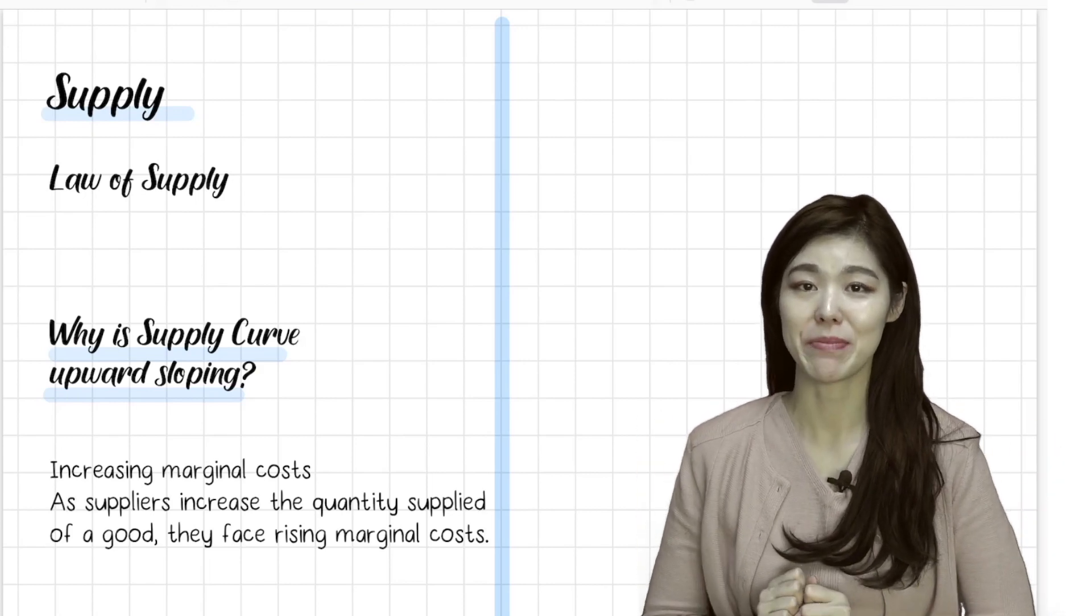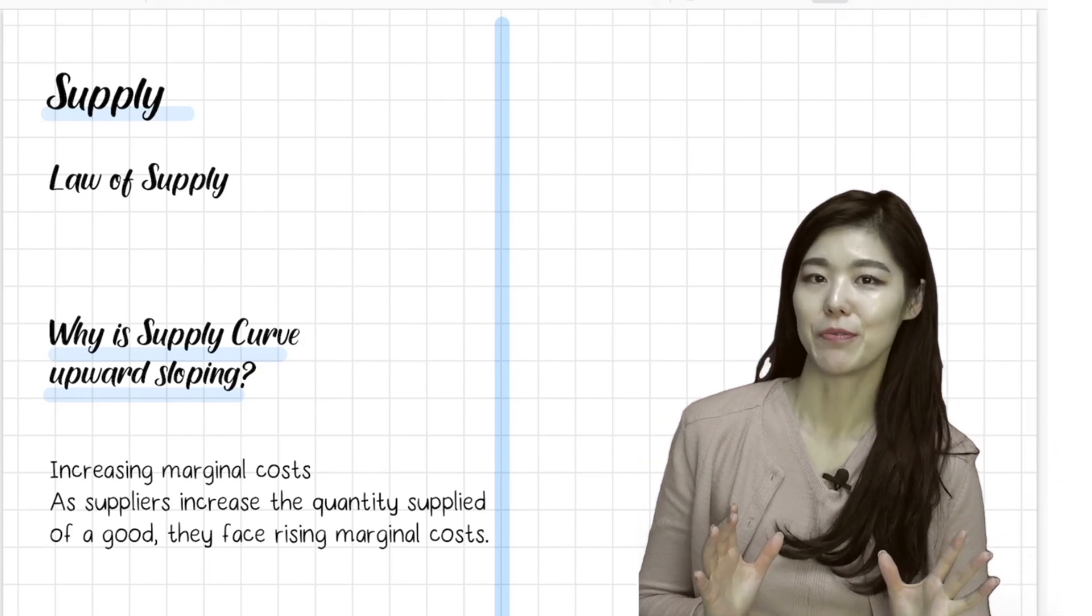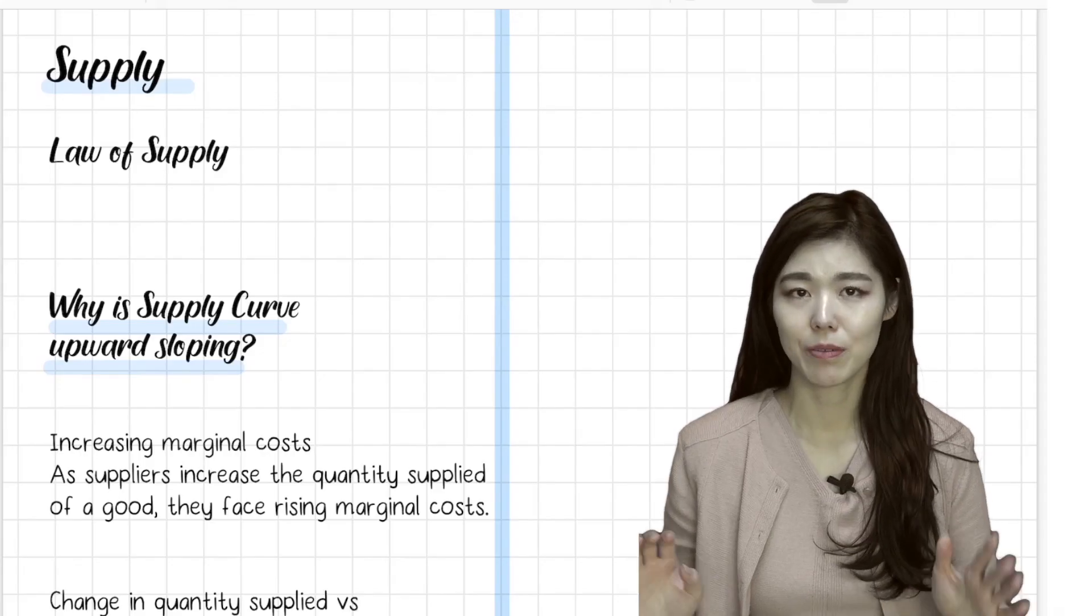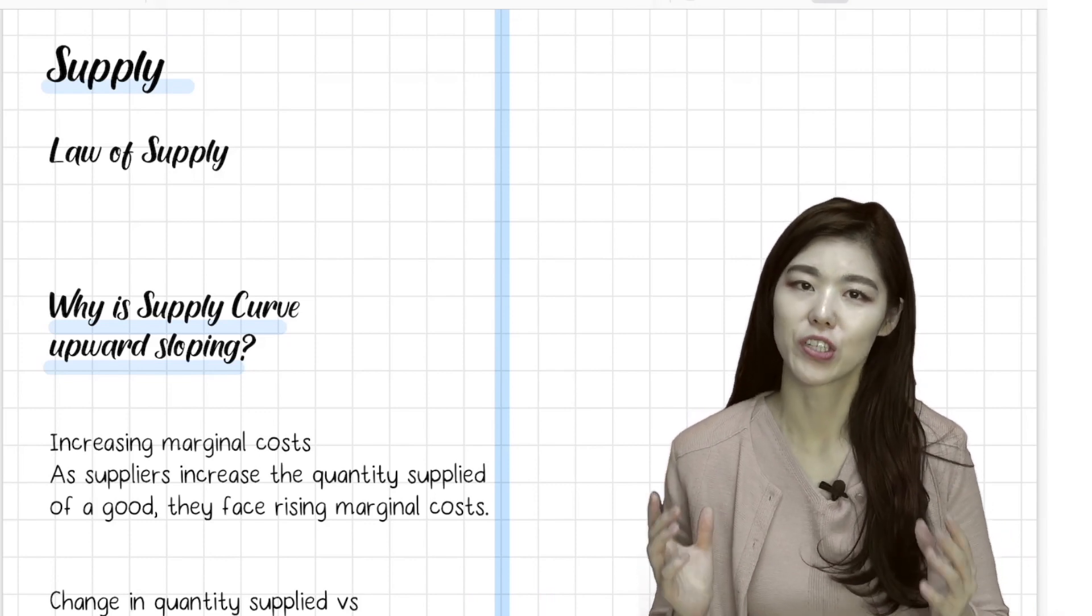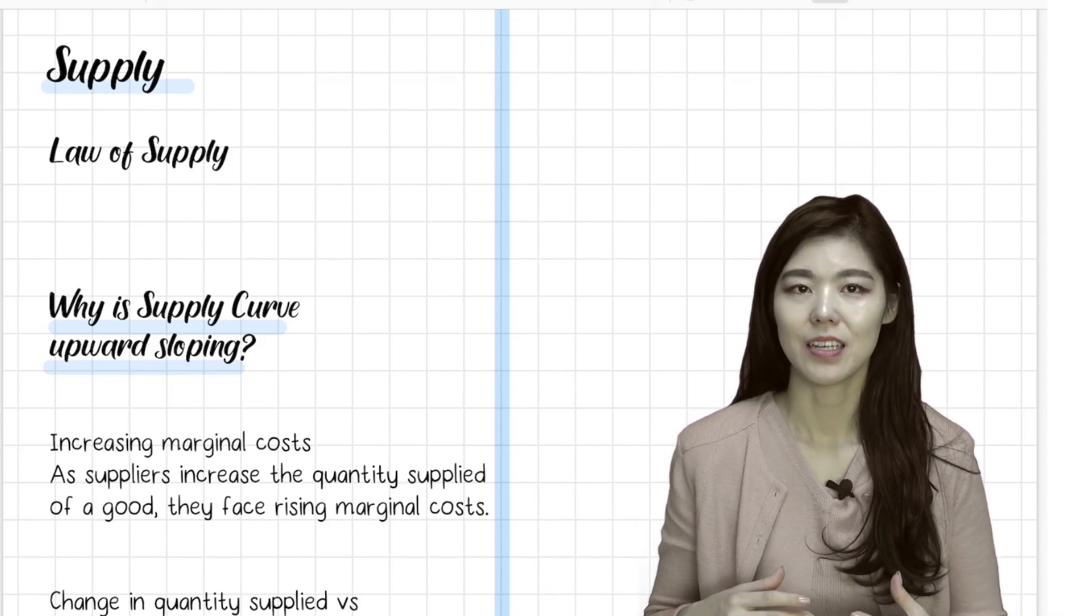Hi, it's Sam teaching you AP Microeconomics. This time we're going to be learning about supply. Remember the law of demand: when the price increases, the quantity demanded of the good decreases. But imagine that you're a seller, that means you supply something.